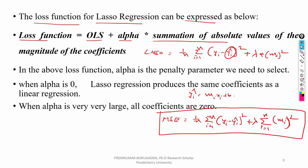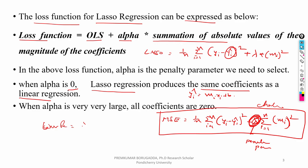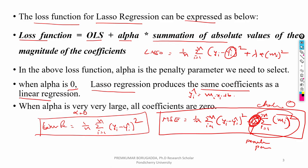In this loss function, alpha is called the penalty parameter, and we have to choose this alpha value manually. Whenever this alpha value is 0, the lasso regression produces the same coefficients as linear regression — that is, just (1/n) * Σ(yi − ŷi)². So whenever alpha equals 0, lasso regression becomes linear regression. Whenever this alpha value is very large, all coefficients — m1, m2, m3 — go to 0.